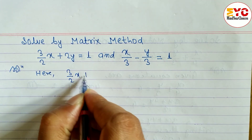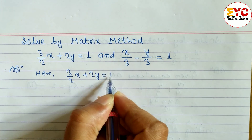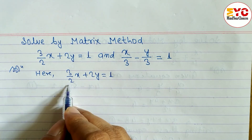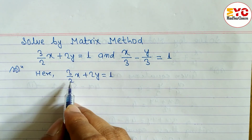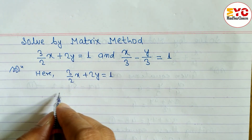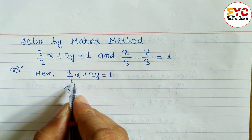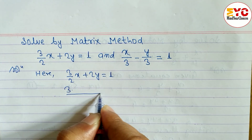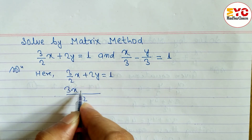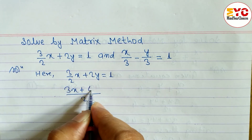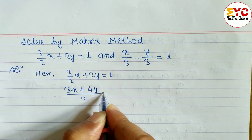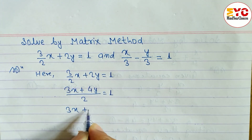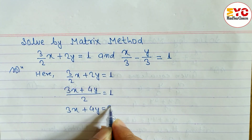The first equation is 3/2 x plus 2y equals 1. You can see here it is in fraction form — 3/2. It's better to take the LCM rather than leave it in fraction form. Taking LCM as 2, we get 3x plus 4y equals 2. This is equation 1.